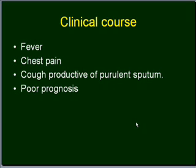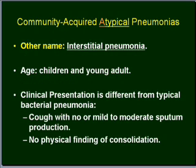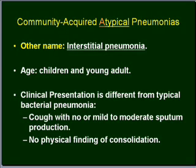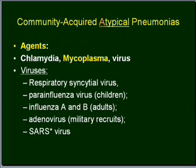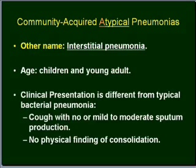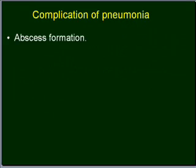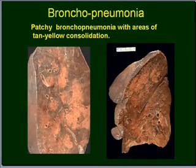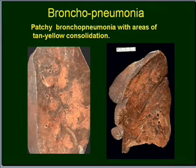Now we are going to discuss atypical pneumonia. I will discuss the basic difference between atypical pneumonia and bacterial pneumonia. Bacterial pneumonia, like bronchopneumonia and lobar pneumonia, is caused by bacteria, and as a result we get exudate mostly present in the alveolus or in the bronchus. Atypical pneumonia raises three questions.